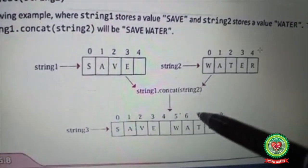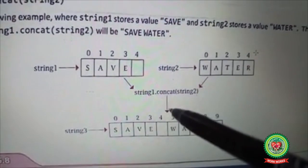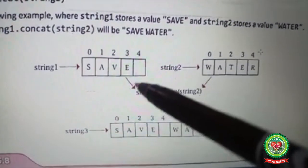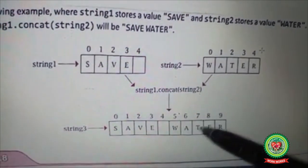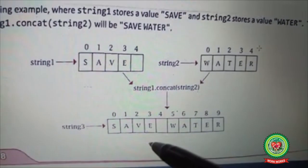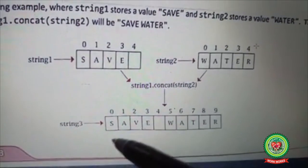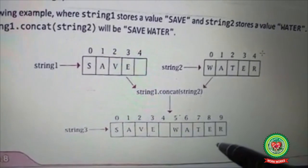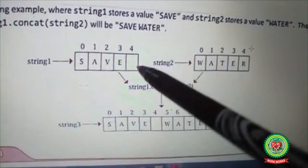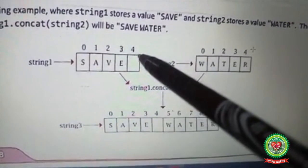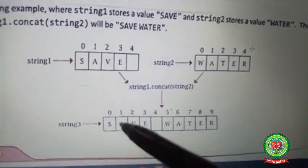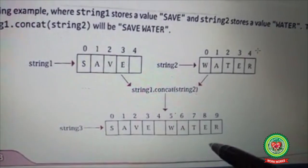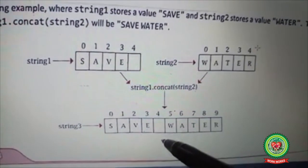String3 stores the result of concatenation of string1 and string2. The answer is 'save water', a total of 10 characters. If we do not leave this space at position 4, then the answer will be 'savewater' without space.